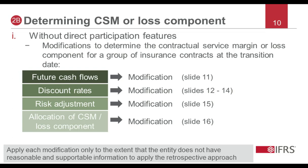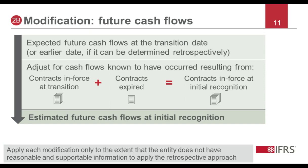The first modification for determining the contractual service margin or loss component is when the entity does not have reasonable and supportable information to estimate the future cash flows expected at initial recognition of a group. The entity starts with the expected future cash flows for the group at the transition date — or alternatively at an earlier date if those cash flows can be determined retrospectively. The entity then adjusts those expected future cash flows for cash flows known to have occurred between initial recognition and the transition date, including cash flows that were in force at initial recognition but de-recognized before or on the transition date. The adjusted amount is then the estimated expected future cash flows at initial recognition.